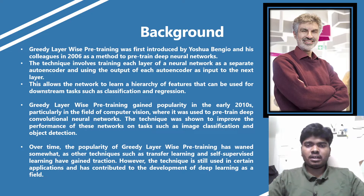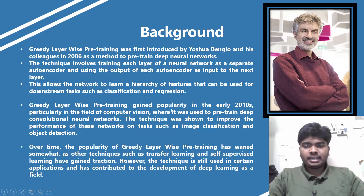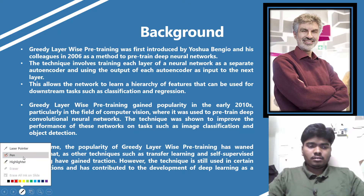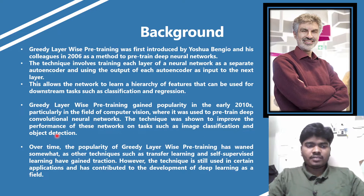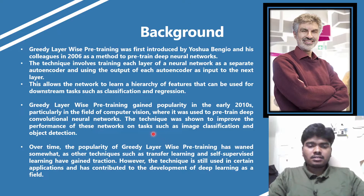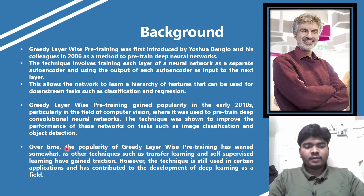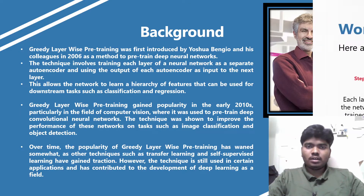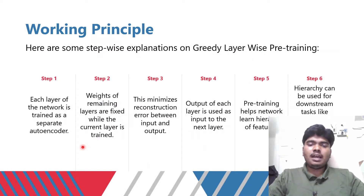We try many things, combine all those outputs, and produce the Greedy Layer-wise Pre-training result. It gained popularity in the early 2010s, particularly in the field of computer vision for image classification and object detection. Over time, its popularity has somewhat waned as other technologies such as transfer learning and self-supervised learning have gained traction.